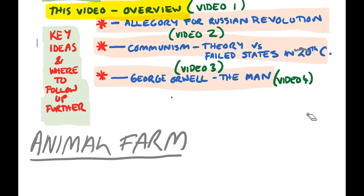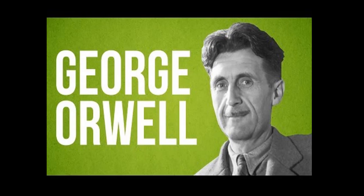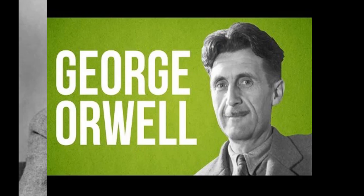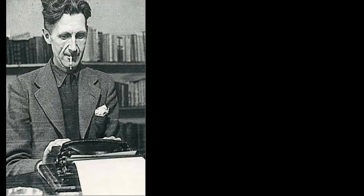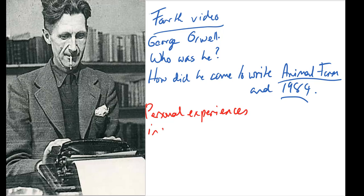The fourth video is really about George Orwell himself — who he was and how it came to be that he wrote this amazing novel and also 1984, another of his significant novels. Why did he write them? How did his personal experiences inform what he thought about the world? He has a really interesting life, including having personally experienced some of the events and dangerous situations he depicts in Animal Farm.